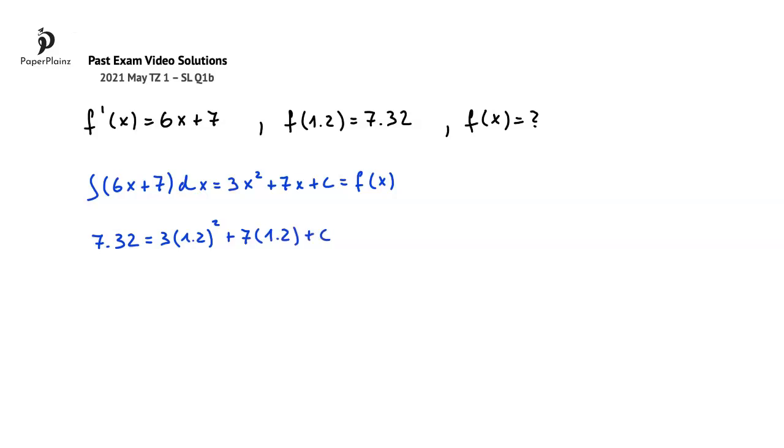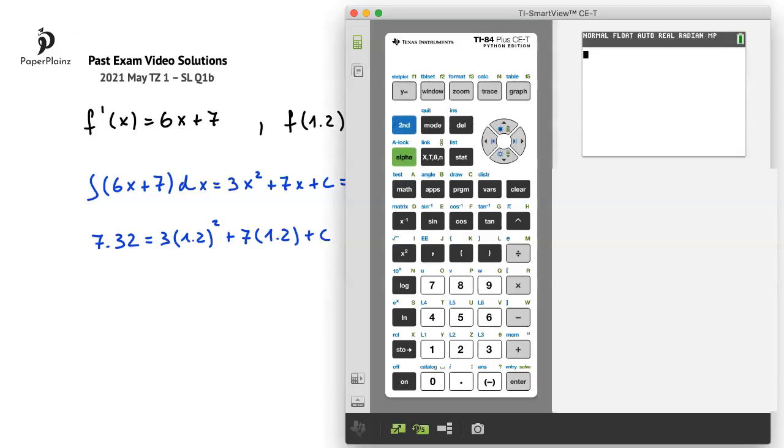Let's use our calculator to find c. There are slightly different ways to do this. Here I will start by adding the two terms on the right hand side. So in the calculator, I will type 3 times 1.2 squared plus 7 times 1.2 and press enter to get the result, which is 12.72.